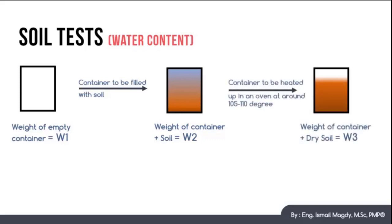Third step, we will insert the container inside an oven, and we will heat it up for 24 hours under temperature of 105 or 110 degrees C to completely evaporate any water content inside the soil, and we will weigh the container filled with dry soil, and this weight will be considered to be W3.